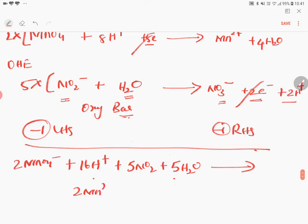2 Mn2 plus, plus 4 into 2, 8 H2O, plus 5 into NO3 minus, 5 into NO3 minus, plus 5 into 2, 10 H plus. Now see.